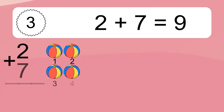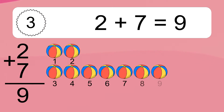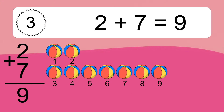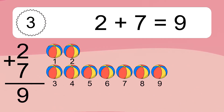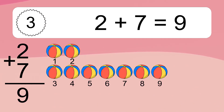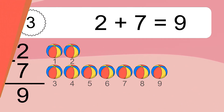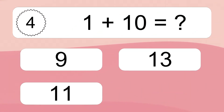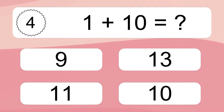2 plus 7 equals what? 2 plus 7 equals 9. Let's count it. 1, 2, 3, 4, 5, 6, 7, 8, 9.